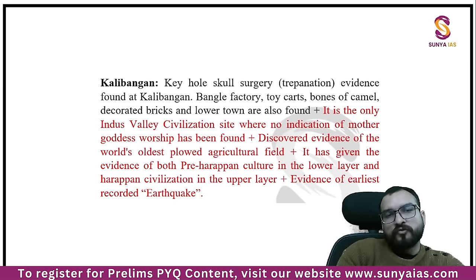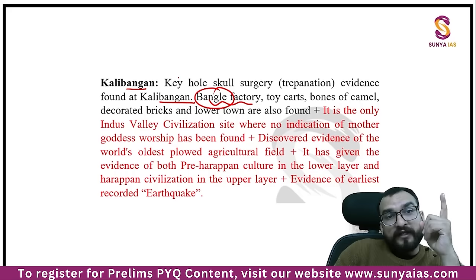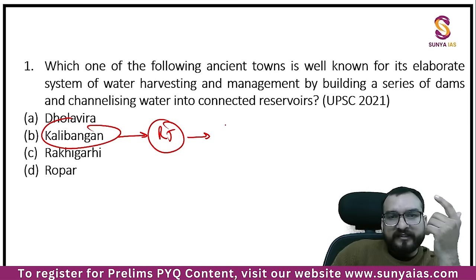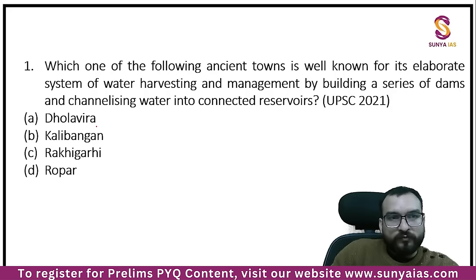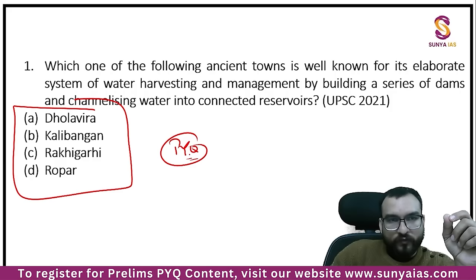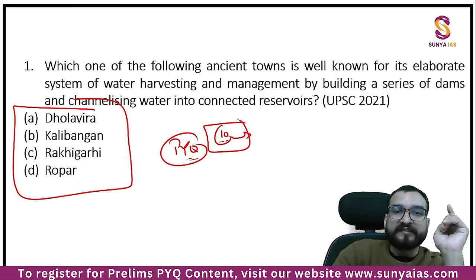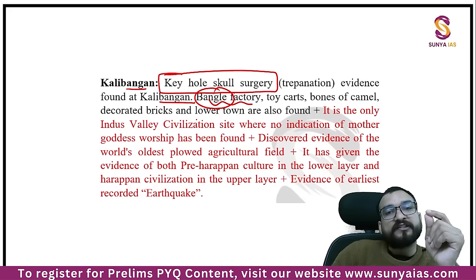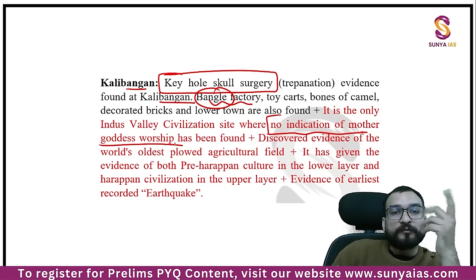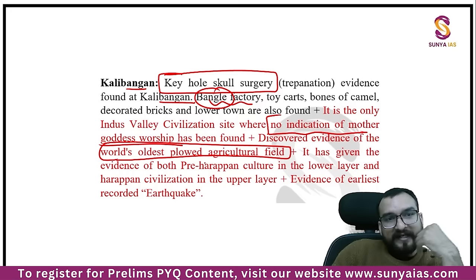Who will find this question easy? Those who have studied it at least once in the right manner. If you left it thinking ancient and medieval history have low cost-benefit, you have missed an easy question that every aspirant might have been knowing. About Kalibangan — situated in Rajasthan, famous for being a bangle factory; here you will also find evidence of keyhole skull surgery. The PYQ approach is: pick this question, add information about sites, and while studying IVC, you pick up the PYQ and add the information — at least focus on 10 sites from PYQ, then add five more for competitive edge.